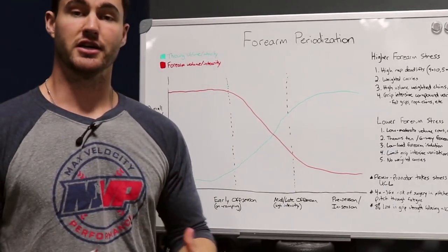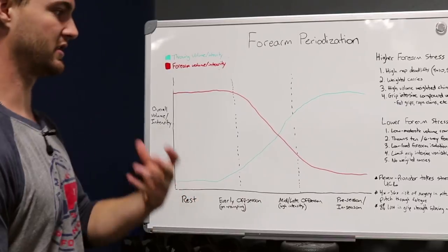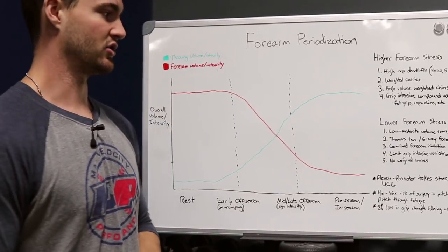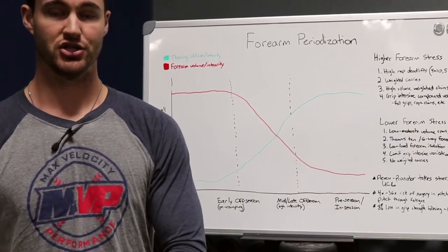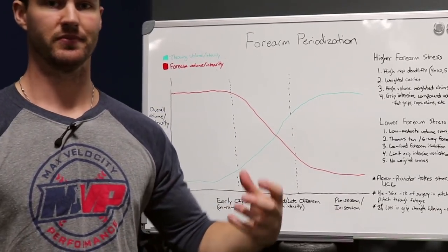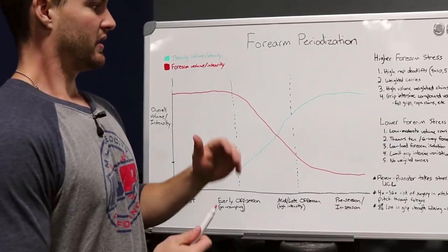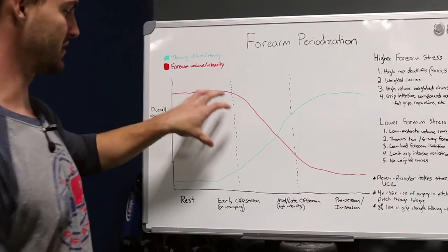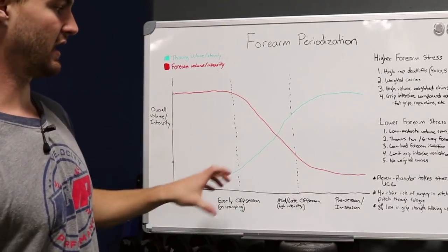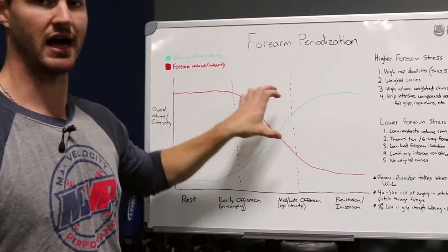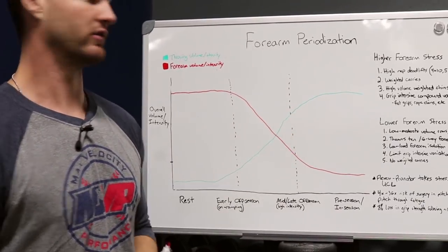And grip intensive compound variations. A lot of well-intentioned coaches will say, okay, well we need to strengthen the forearms to work on preventing injuries. So we're going to crush guys with fat grip chin-ups, fat grip rows, using ropes for rows or chin-ups, anything like that. Again, that's very grip intensive. So while that does have a place, keeping those more towards the early off-season rest phases and really starting to phase those out if at all during the in-season and the very high intensity throwing phases.